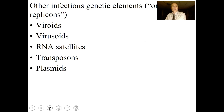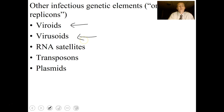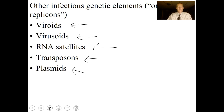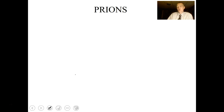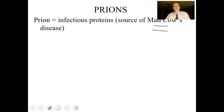Other things besides viruses can cause disease. Viroids and virusoids are basically pieces of genetic material that replicate and infect organisms. RNA satellites, transposons, and plasmids are pieces of DNA that can transmit disease. Prions are infectious proteins — you may have heard of mad cow disease, where cows that eat other infected cow materials acquire prions that destroy the brain, causing them to appear mad.